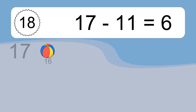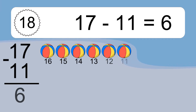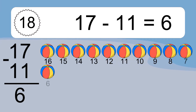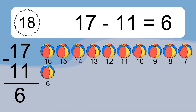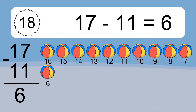17 minus 11 equals 6. Let's count it. 16, 15, 14, 13, 12, 11, 10, 9, 8, 7, 6.